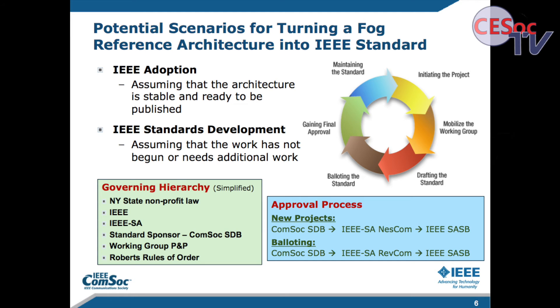In the other case where standards development actually needs to occur, you start with a working group. For any standard, you initiate the project, get the working group together, draft the standard, and it's balloted. There are certain rules about representation and balloting so that all concerned groups get to ballot a standard. Then the standard is approved. And after a period of time — a few years — standards have to be maintained, and they're either improved or shut down for a standard that no longer serves a purpose.